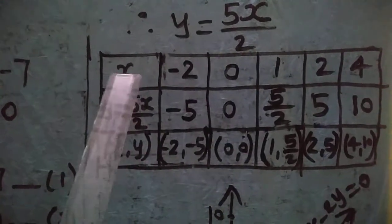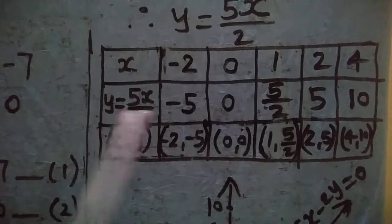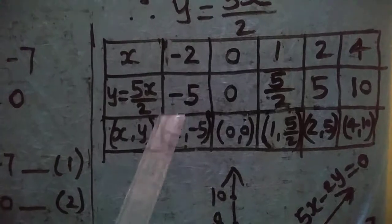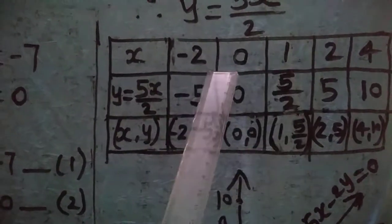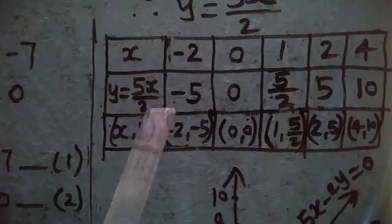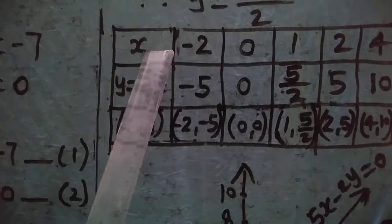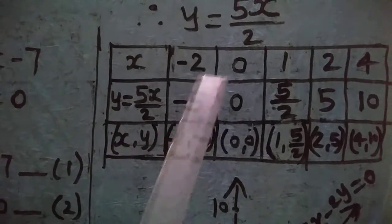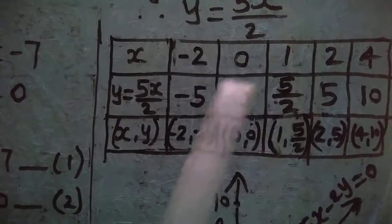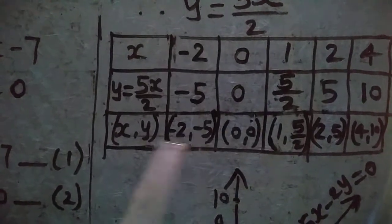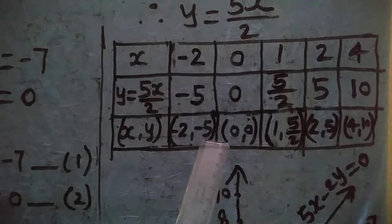Again, we take values of x and compute y. Choose values of x such that we get integer values of y. When x = -2: y = 5×(-2) / 2 = -10/2 = -5. So the coordinates are (-2, -5).